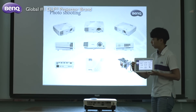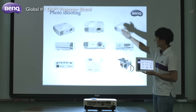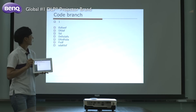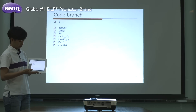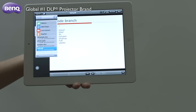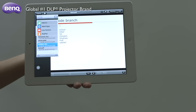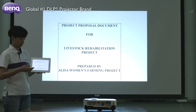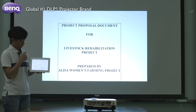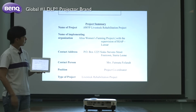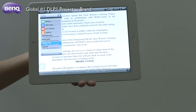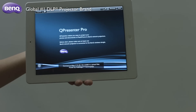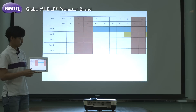Here you can make annotations with the sketch function. The Q-Presenter Pro app also allows you to select other types of files saved on your mobile device, such as PDF files, Word files, and Excel files — just follow the same steps as opening a PowerPoint file.